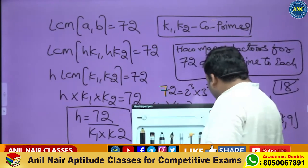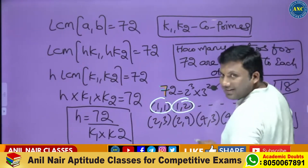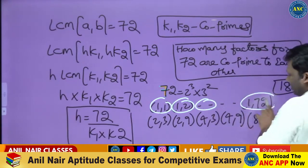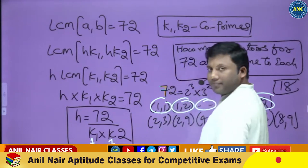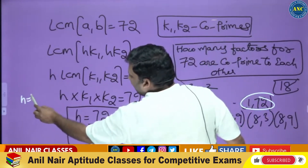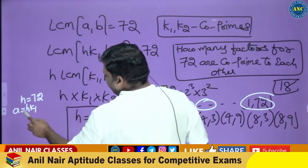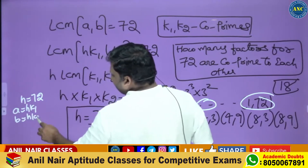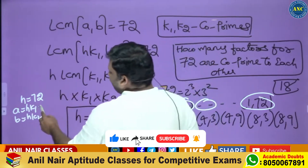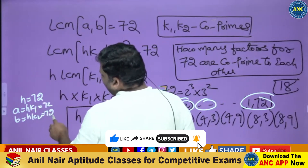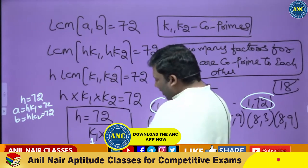Is 1 and 1 co-prime? Yes. Is 1 and 2 co-prime? Yes. Is 1 and 3 co-prime? Yes. Is 1 and 72 co-prime? Yes. If k1=1 and k2=1, then h=72, so a = h·k1 = 72·1 = 72 and b = h·k2 = 72·1 = 72. LCM(72, 72) = 72. One case obtained.